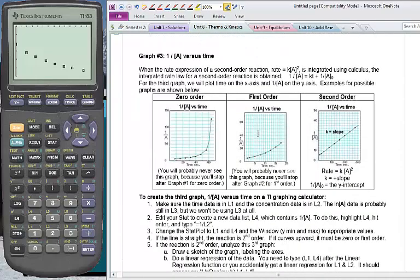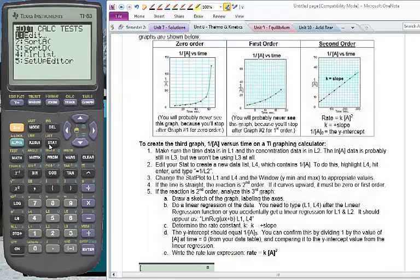But jump on down to the third graph. And for these reactions it's easiest if you have a zero order reaction because you do the first graph and you stop. Or a first order reaction you do the second graph and you stop. But for a second order reaction you have to go to the third graph. So for the third graph we want to plot time on x and 1 over the initial concentration on the y axis. So we're going to go back to our stat plot.